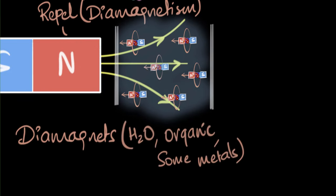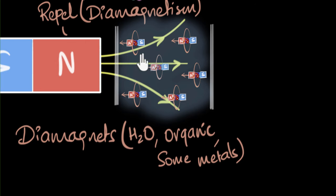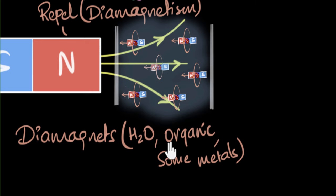Examples of diamagnets include water, a lot of organic substances — like you, me, wood. All living beings are diamagnetic. There are some metals as well, which we'll get back to later. Although diamagnetism is a very, very weak property — which is why you need careful experiments to see it — if the external field is strong enough, the repulsion can overcome gravity and you can levitate things. Frogs have been levitated this way; you can find videos of it online.